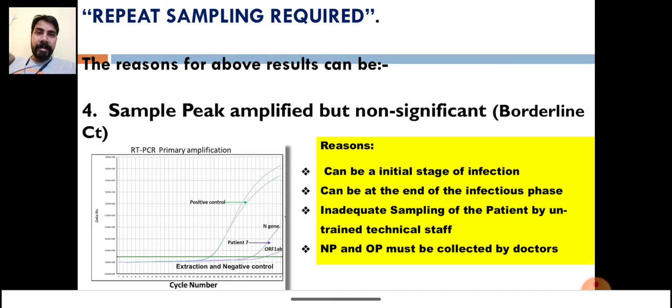The last reason is a very important reason for repeat sampling: sample peak amplified but not significant. This means IC amplified, but the sample peak—the COVID peak, the COVID genes which we are using to identify whether the patient is positive or negative—are amplified but not significant.